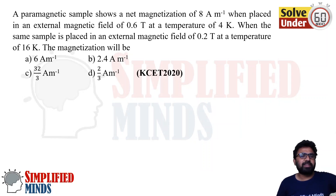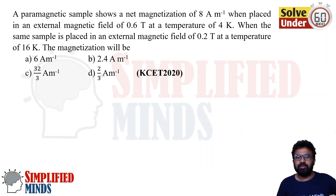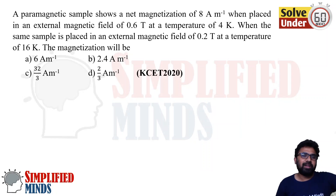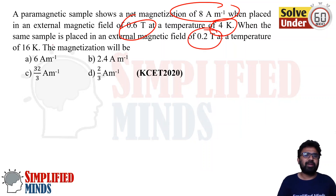The next question: a sample is placed in an external magnetic field of 0.6 T at a temperature of 4 K. When it is placed in 0.2 T at a temperature of 16 K, the magnetization will change. They give you a sample's magnetization at some B value and some temperature, then ask what the magnetization is at a different magnetic field and temperature.